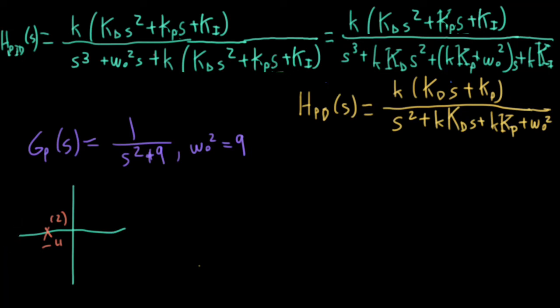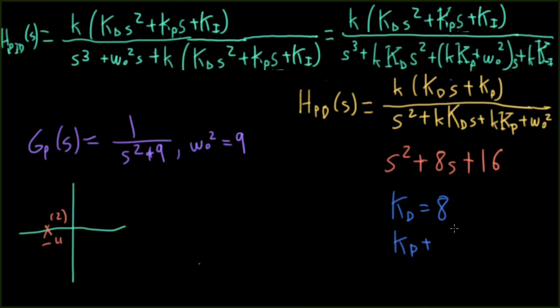So let's suppose I wanted to put both poles at minus four. So let's see, matching up s squared plus 8s plus 16, then I would say that kd is equal to eight, and kp plus omega naught squared, which is nine, is equal to 16. So kp should equal seven.